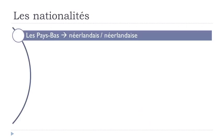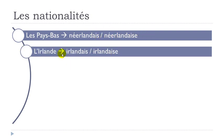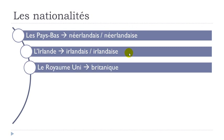Les Pays-Bas — néerlandais, néerlandaise. L'Irlande — irlandais, irlandaise. Le Royaume-Uni — britannique. Only one form, whether it's masculine or feminine: britannique.